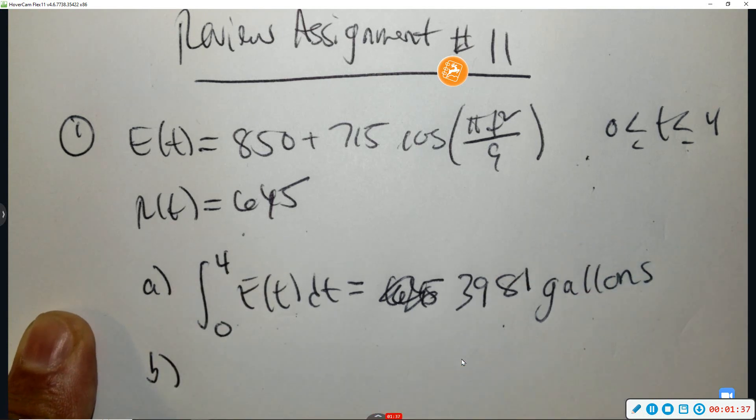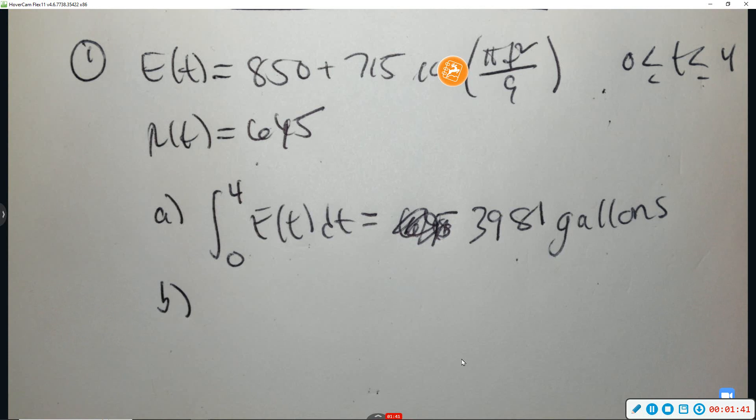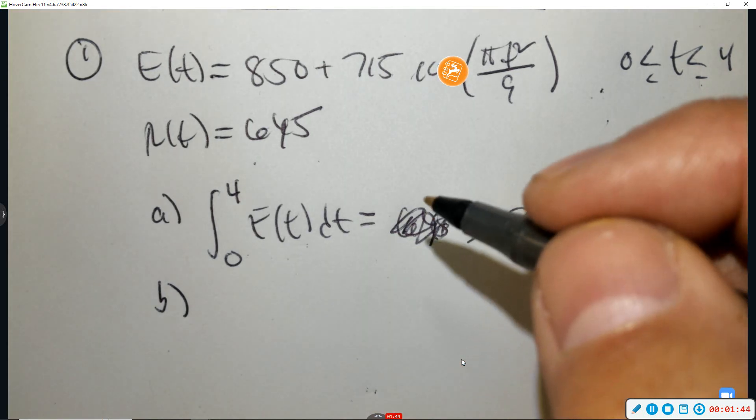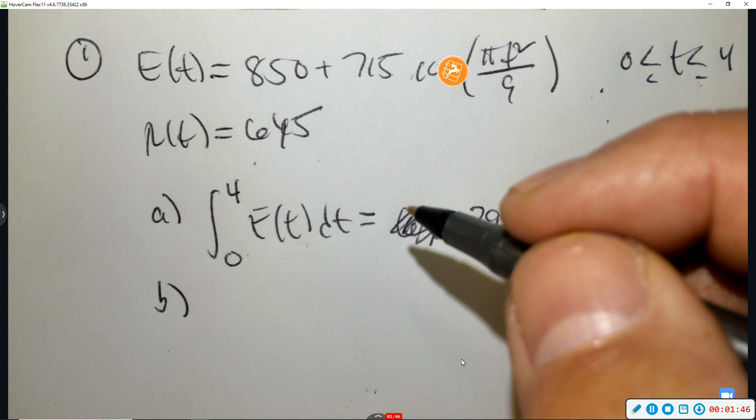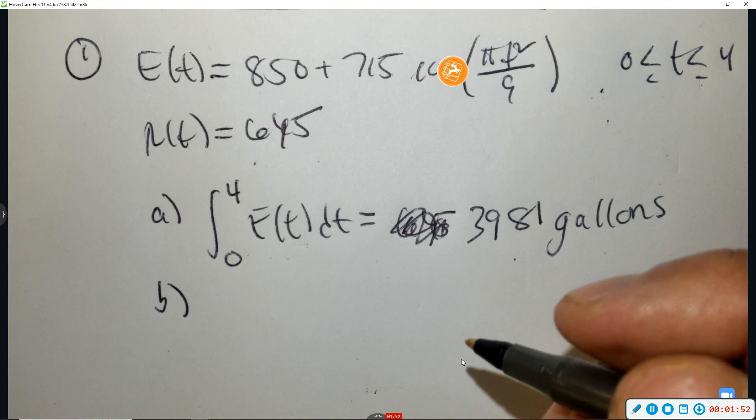Part B, from zero to four, at what time T is the amount of sewage in the treatment tank the greatest? And what is the maximum amount of sewage in the tank? And justify your answers.